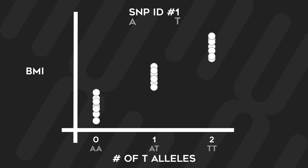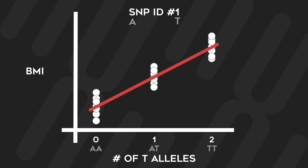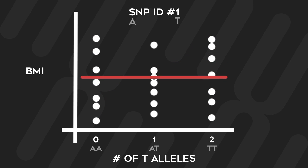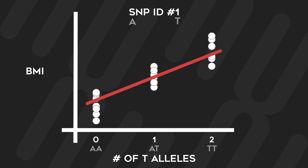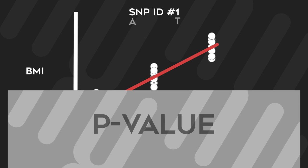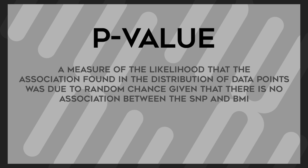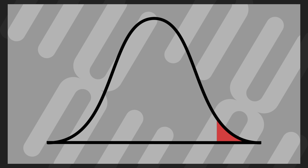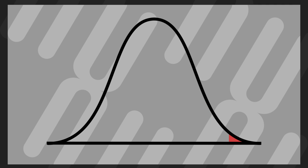Once each individual is plotted, the program tries to draw a line to the data that best predicts the relationship between the number of alleles and the phenotype. If there is no association between that SNP and BMI, the regression line would essentially be a horizontal line. However, if an association is present, you can expect the regression line to have some sort of slope. The effectiveness of the line at predicting the data points determines the p-value. The p-value is a measure of the likelihood that the association found in the distribution of data points was due to random chance, given that there is no association between the SNP and BMI. The stronger the data points cluster around a sloped regression line, the less likely it is that it is due to random chance, producing a small p-value.